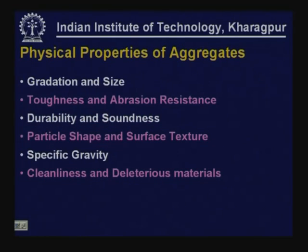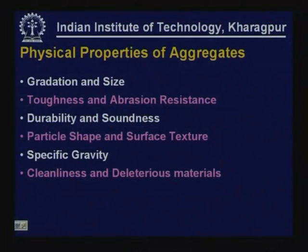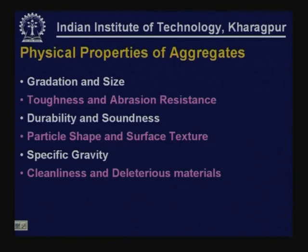Various physical properties of aggregates affect pavement performance, material handling, construction, and layer thicknesses. These include: gradation, maximum aggregate size, toughness and abrasion resistance, durability and soundness, particle shape and surface texture, specific gravity, and cleanliness and presence of deleterious materials.